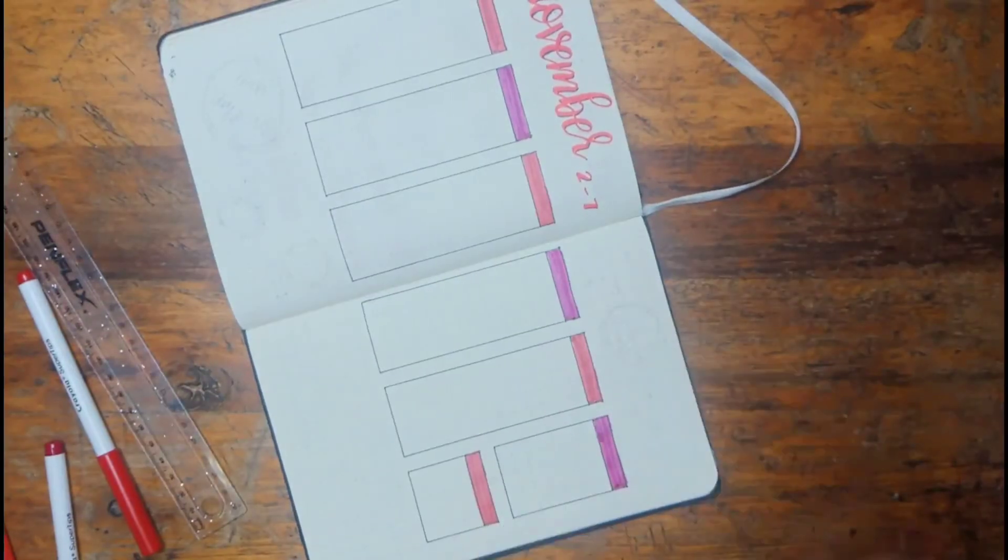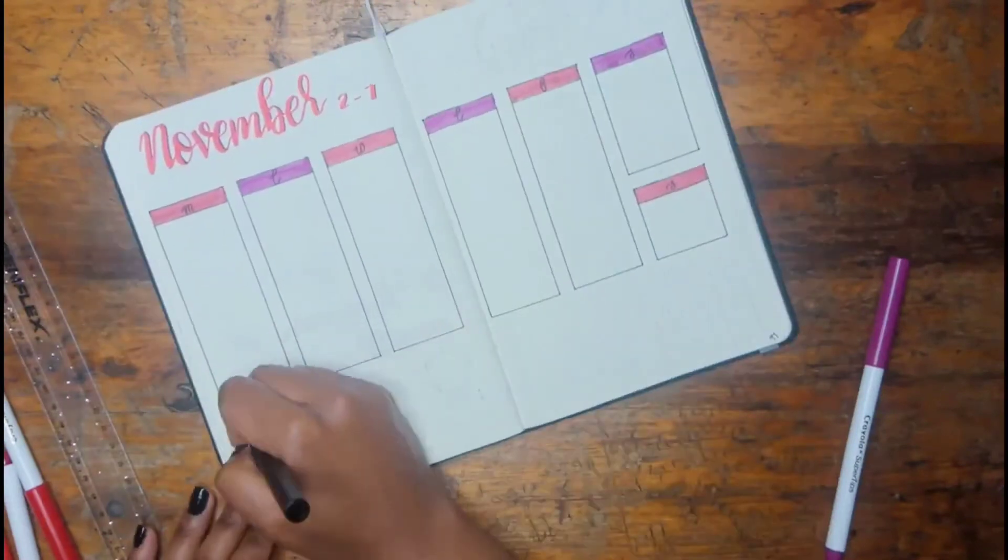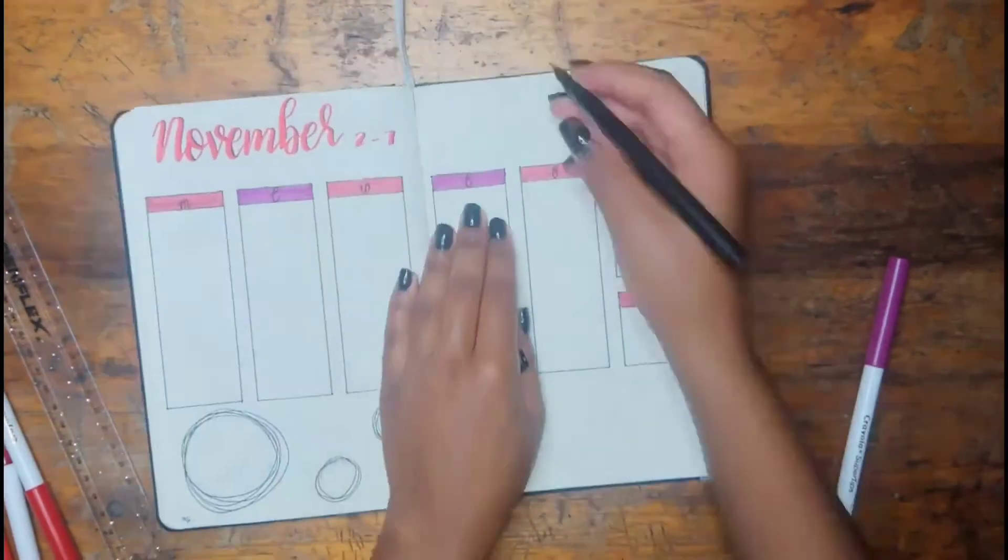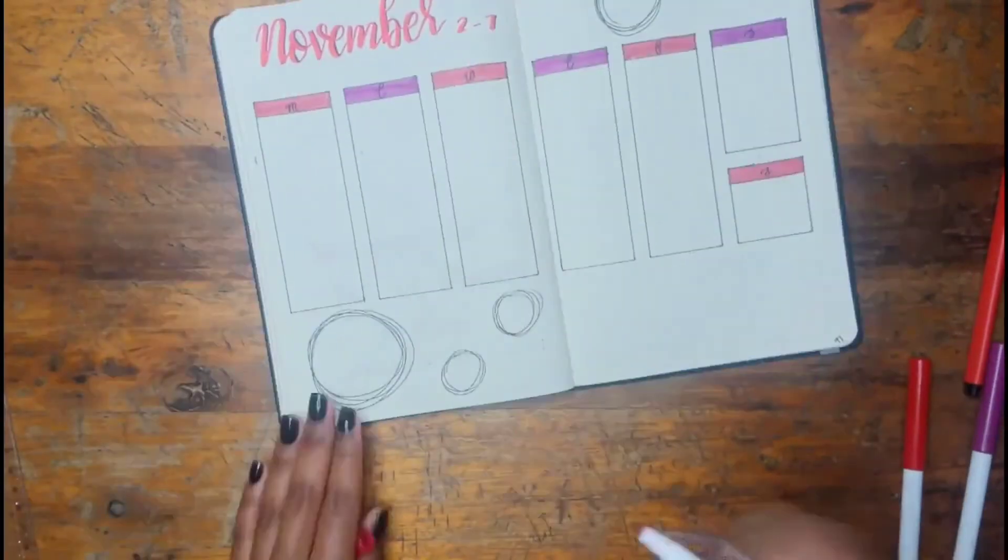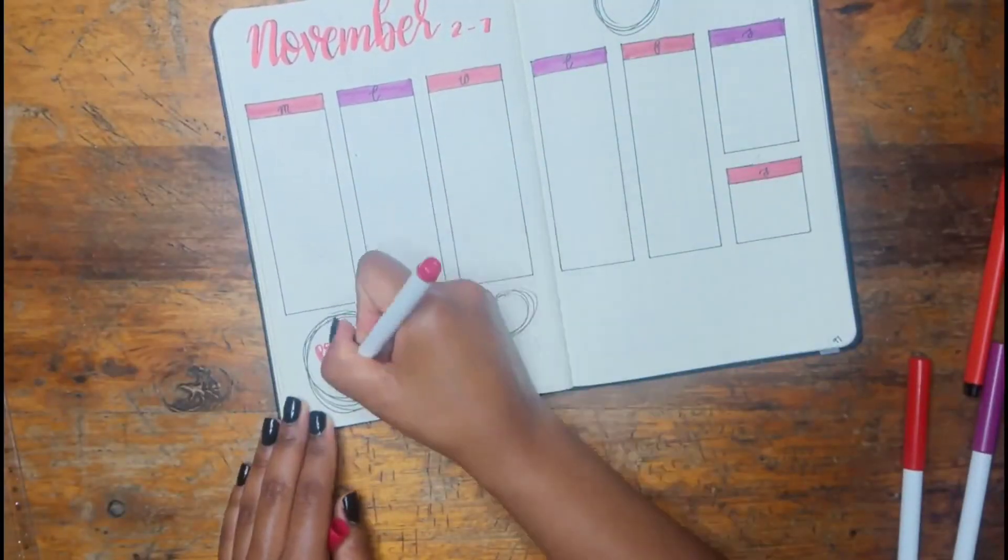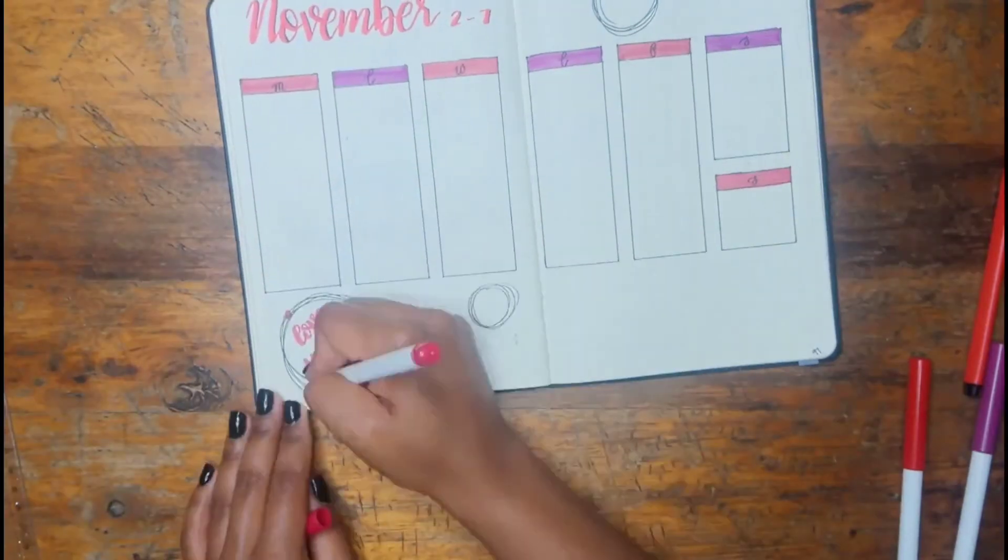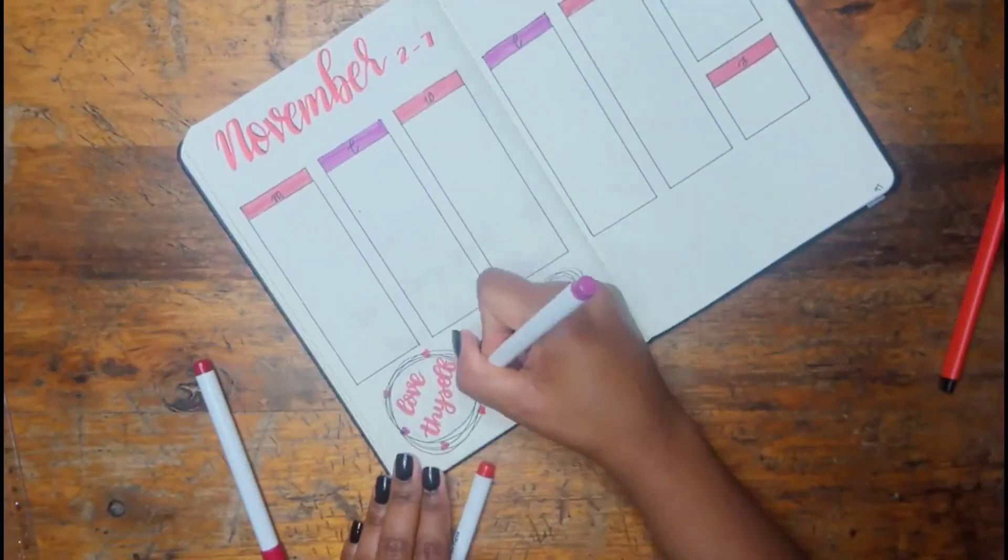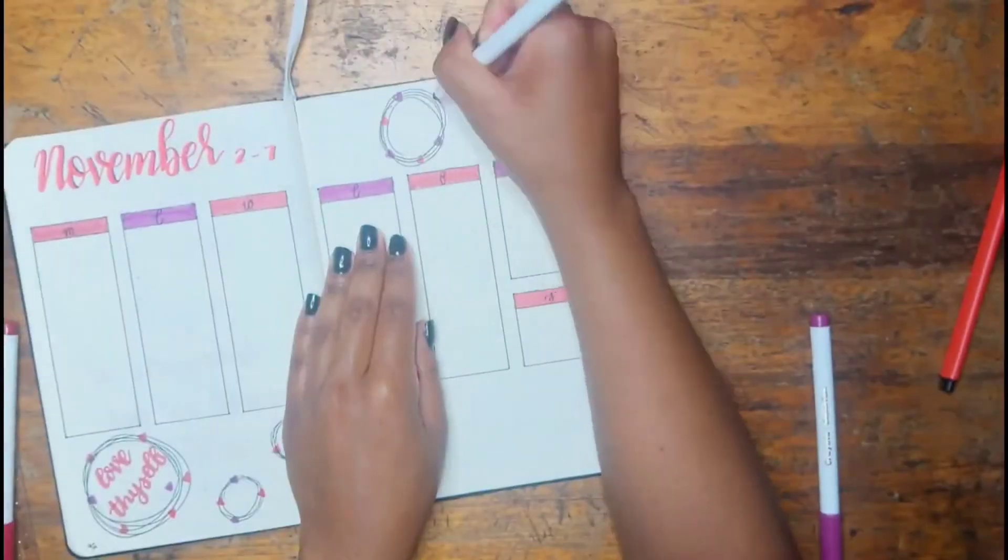For this weekly I decided to go for this vertical layout, which I don't really like as much because I don't have much space to write. But you know, I just like how it looked when I sketched it out so we're going with it.